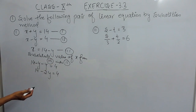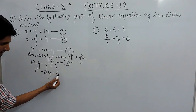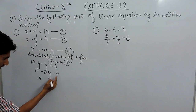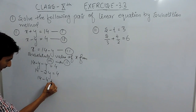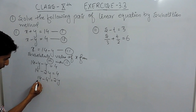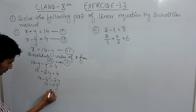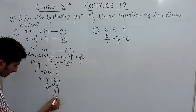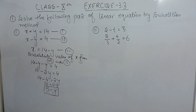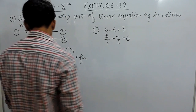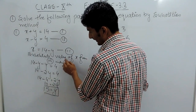So I am shifting the variable to one side and the constant to the other side. The sign will change — this positive becomes negative and this negative becomes positive. So 14 minus 4 is 10, and we have 2y. Dividing both sides by 2, the value of y is equal to 5.